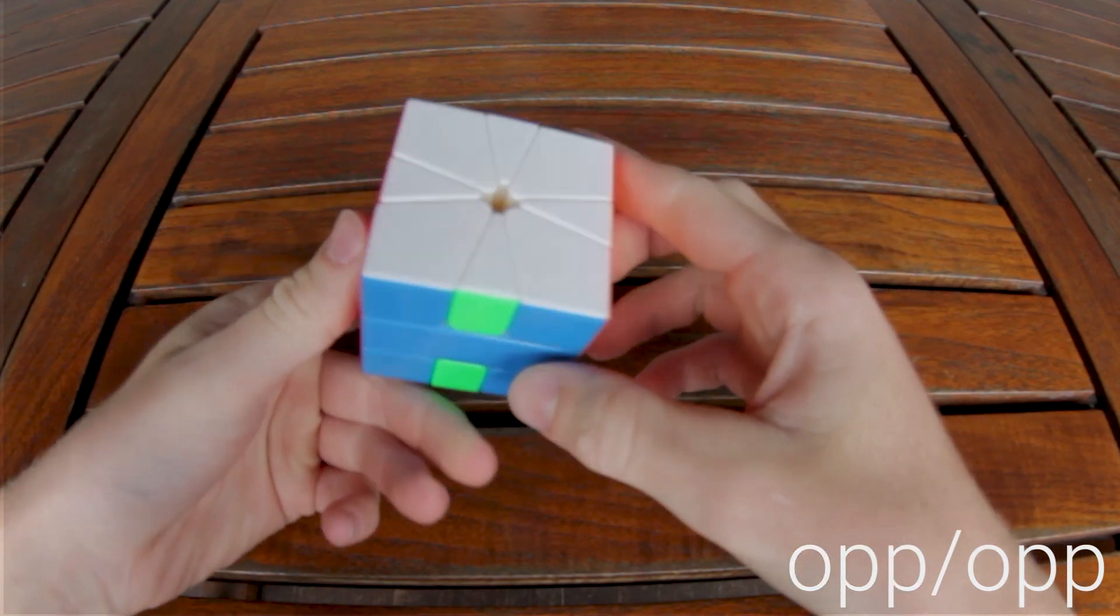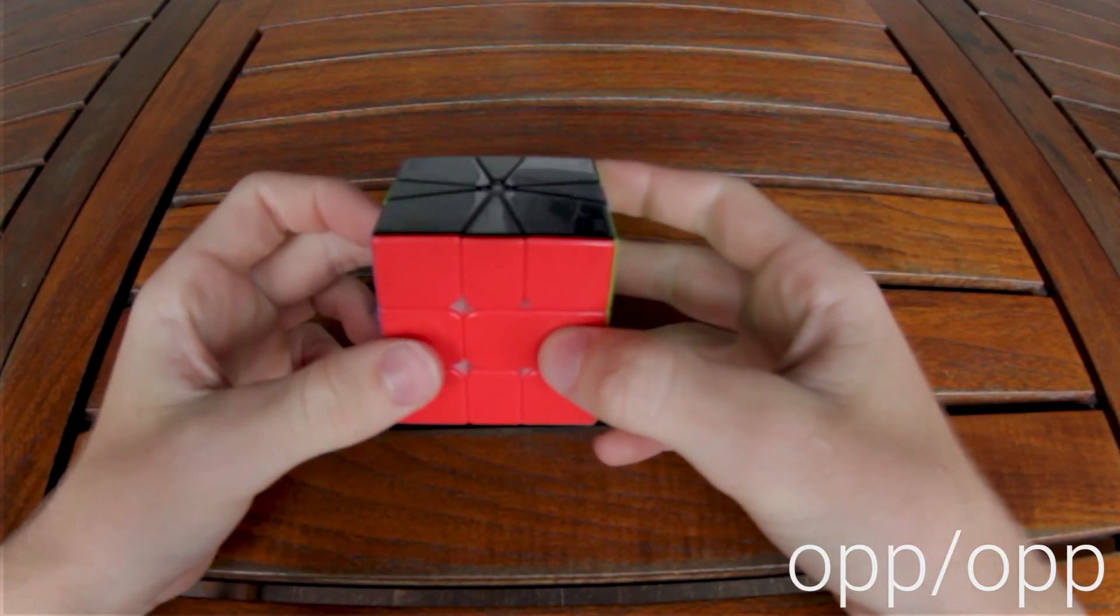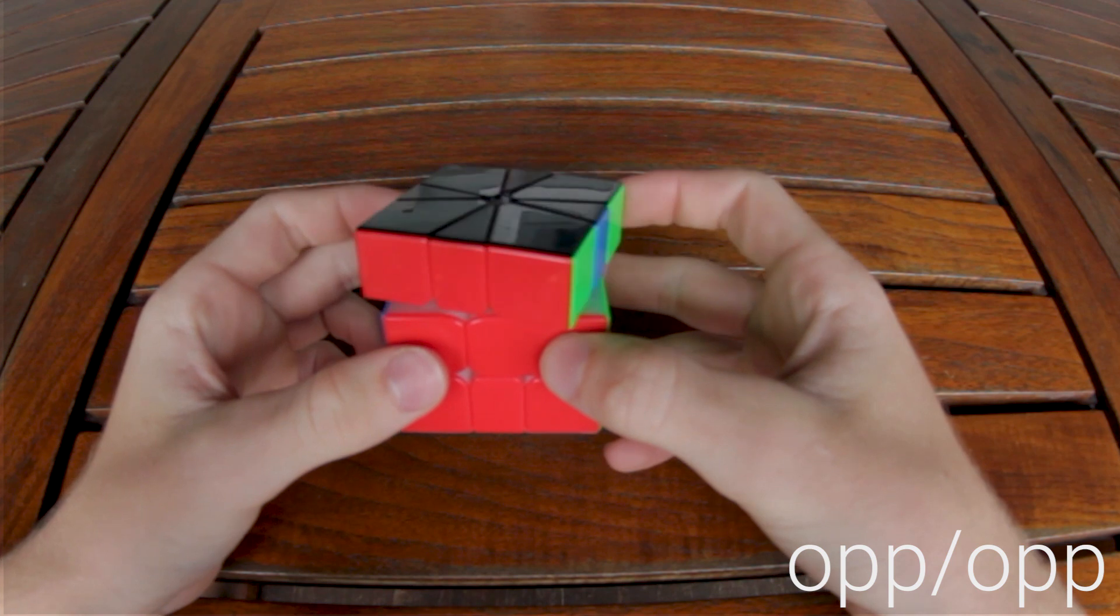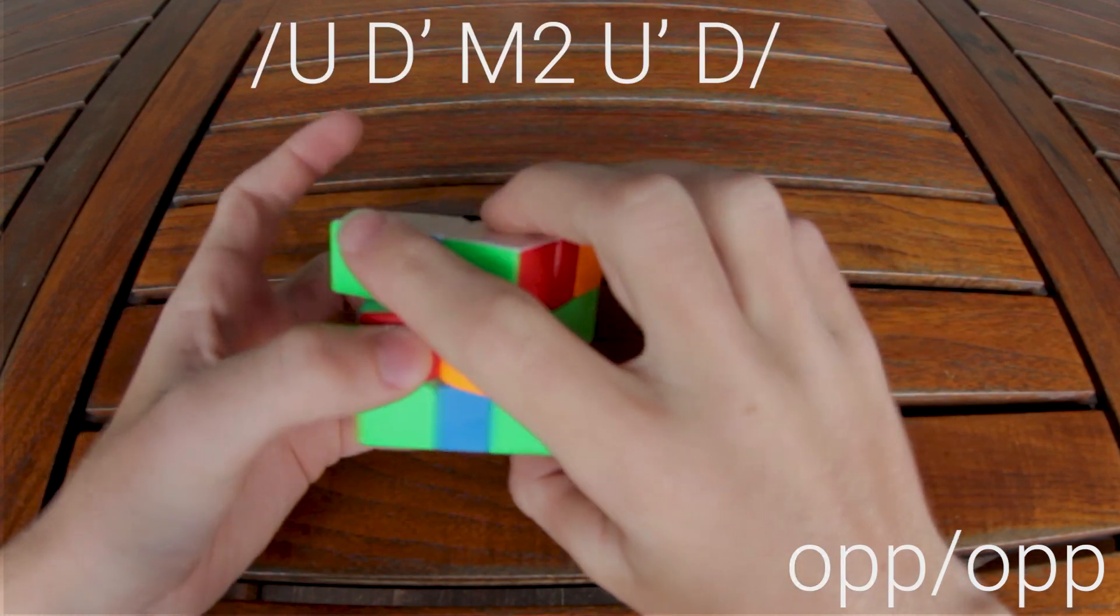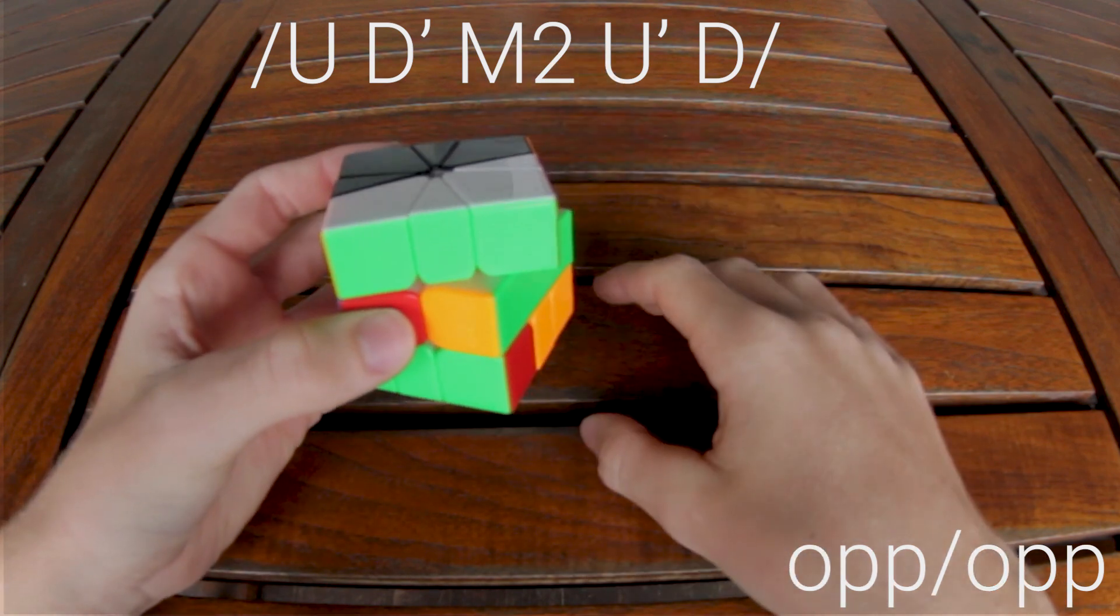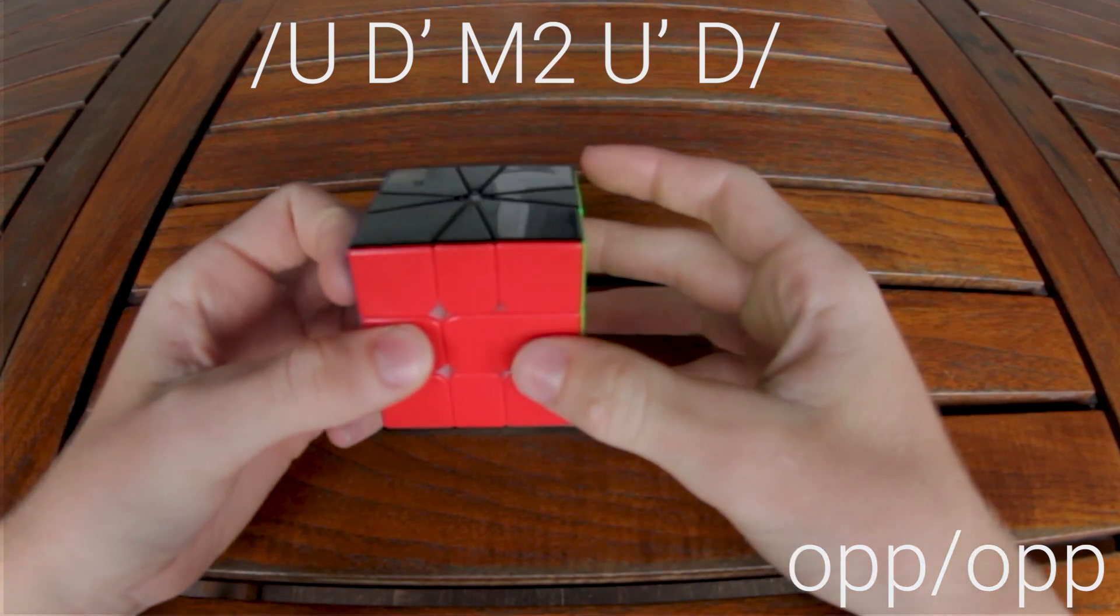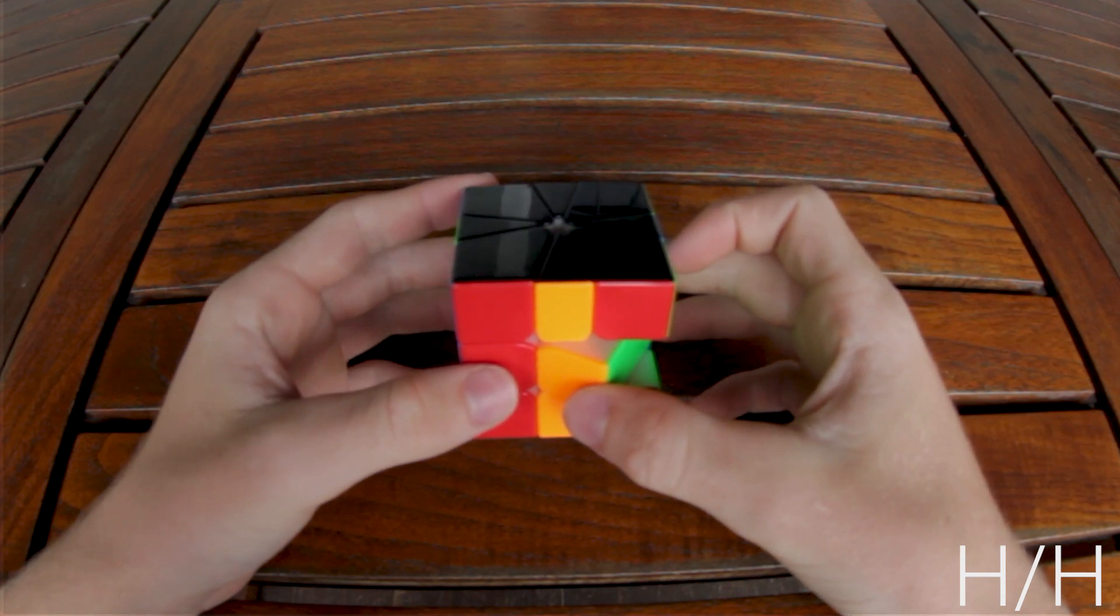It's useful to know the same algorithm from different angles. For when it's on the side, you still slice, U, D prime, M2, U prime, D, slice. Both those algorithms can come in handy.